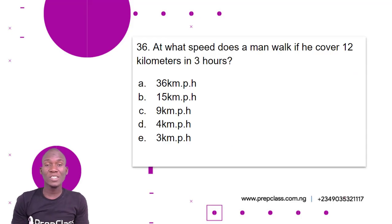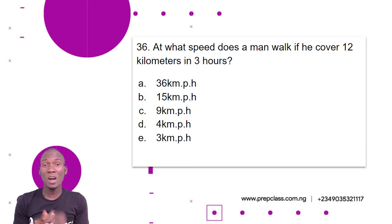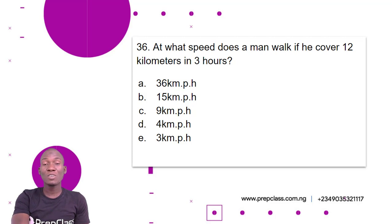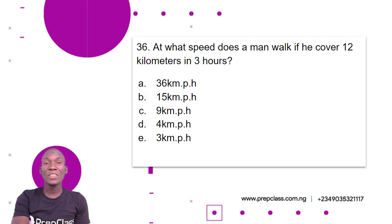Question 36. At what speed does a man walk if he covers 12 km in 3 hours? A. 36 km per hour. B. 15 km per hour. C. 9 km per hour. D. 4 km per hour. E. 3 km per hour.